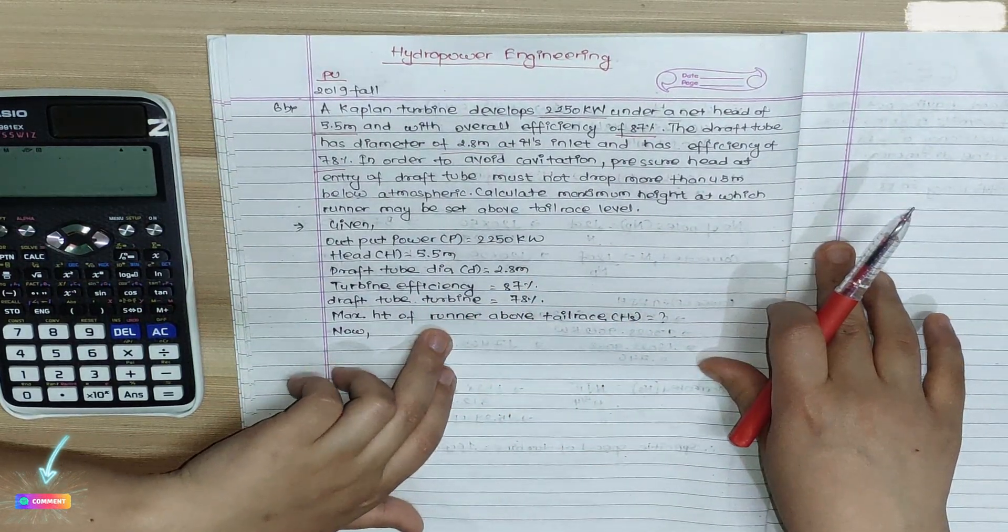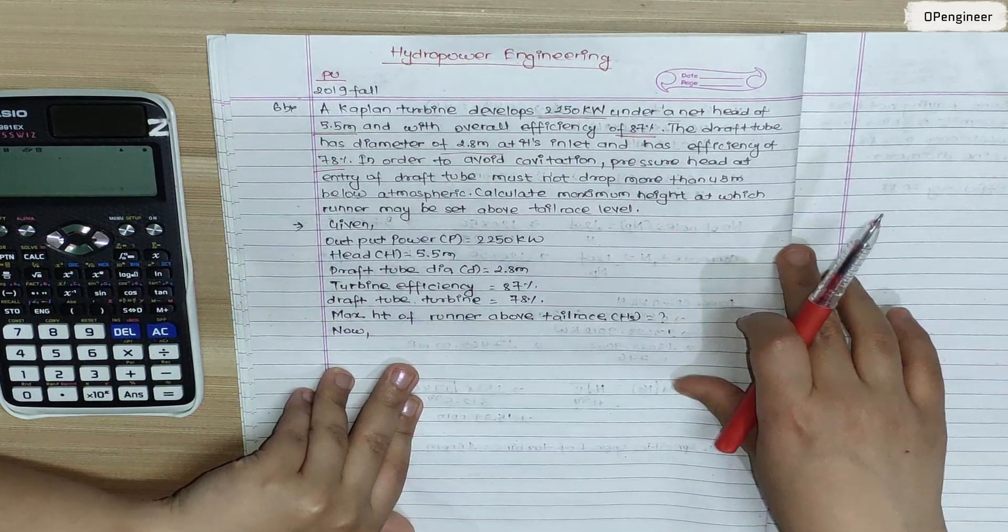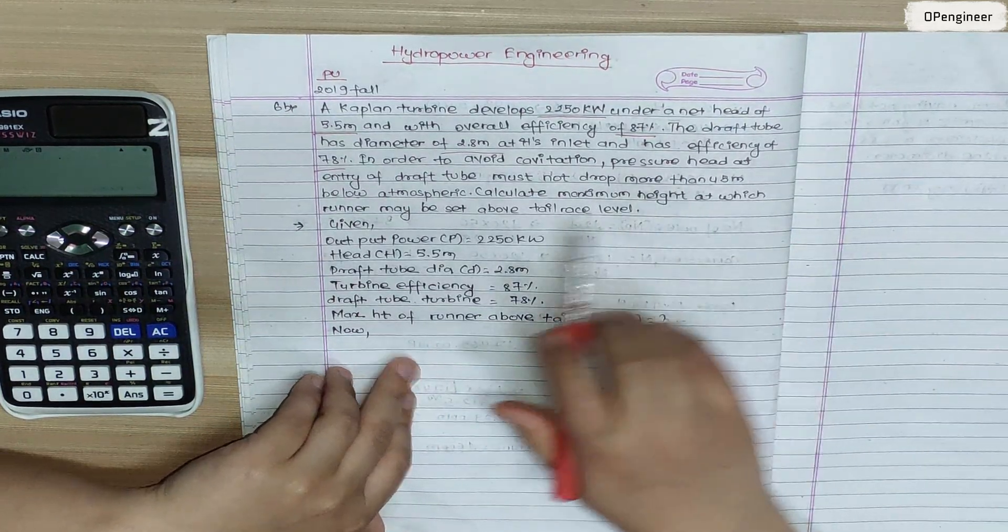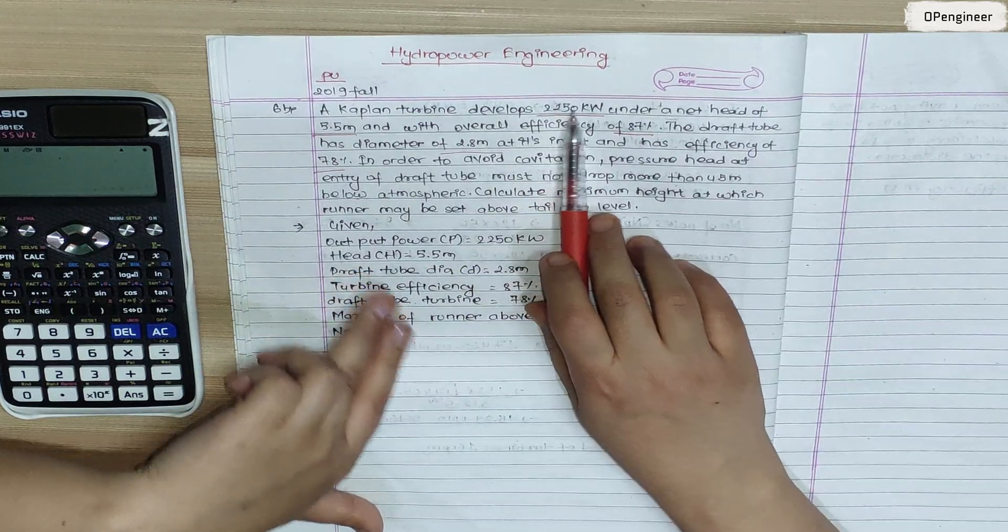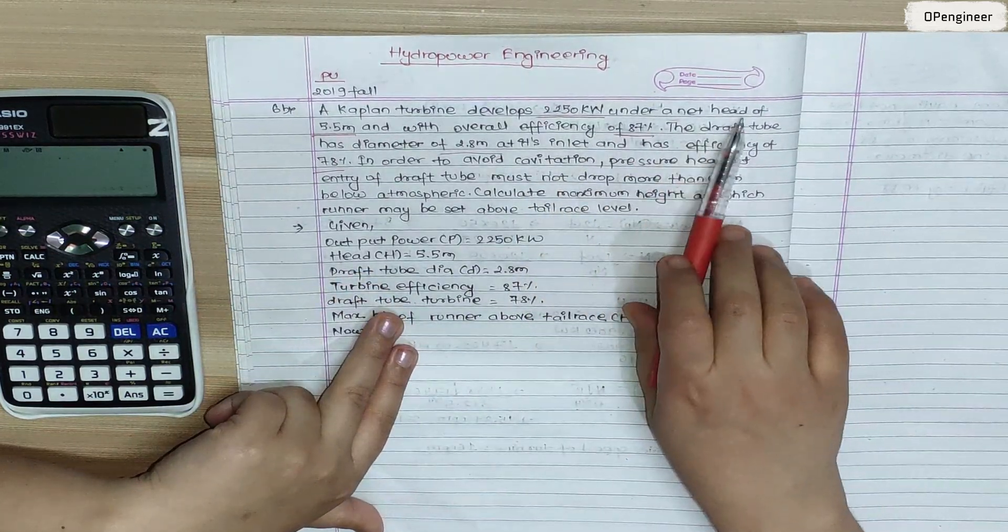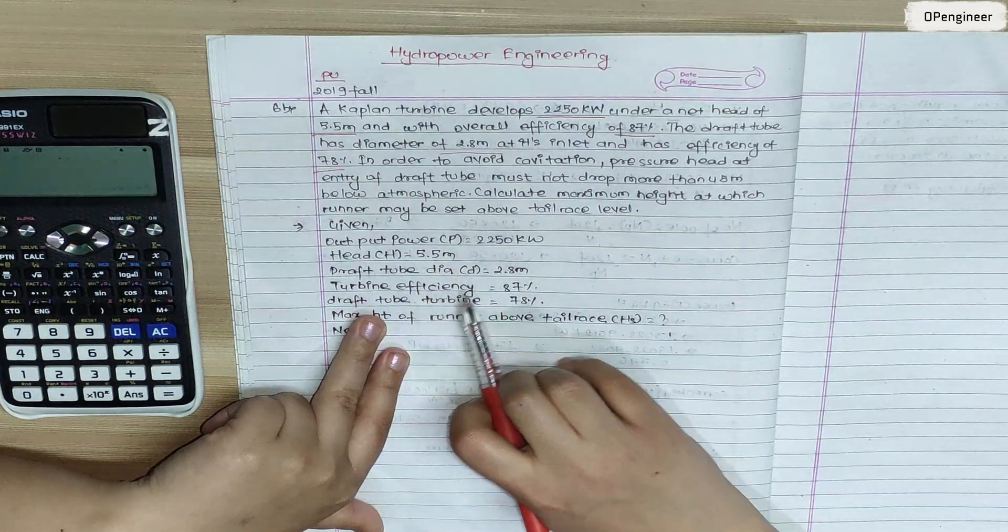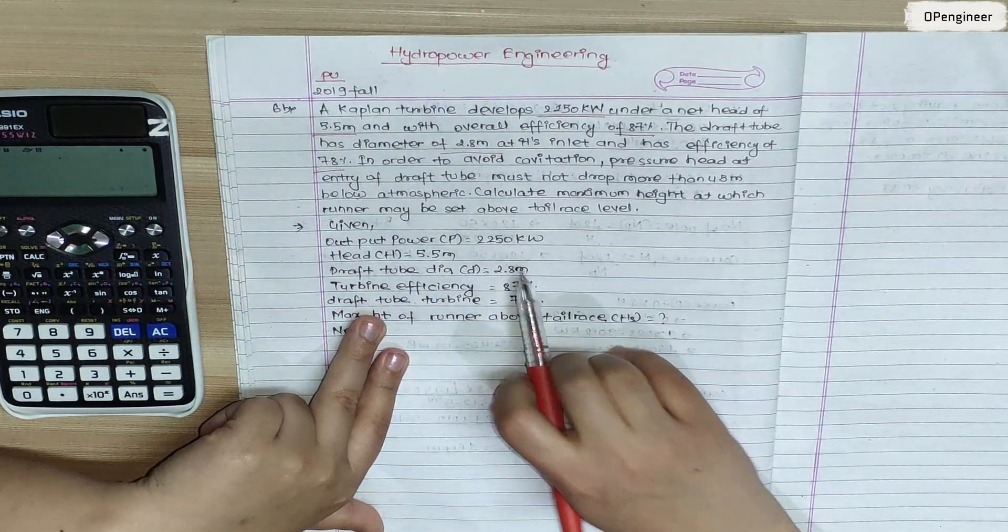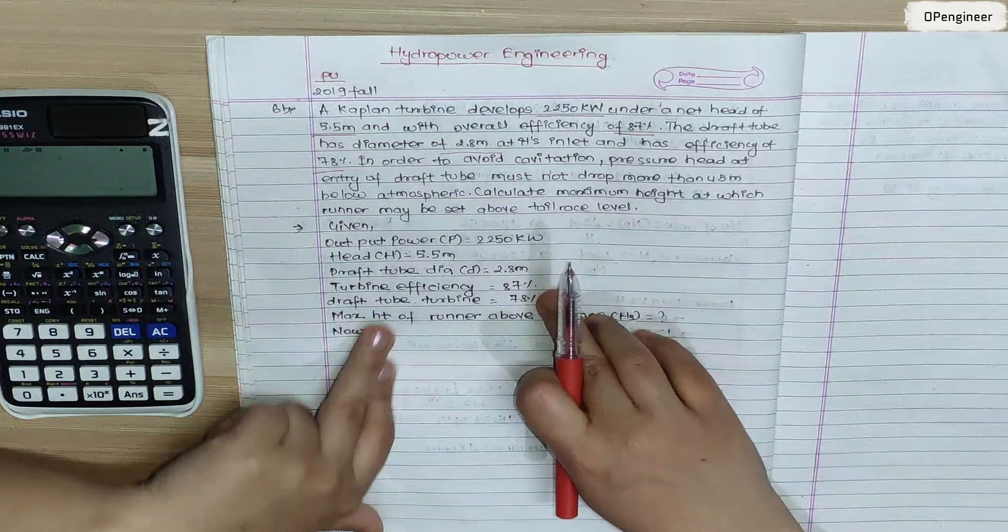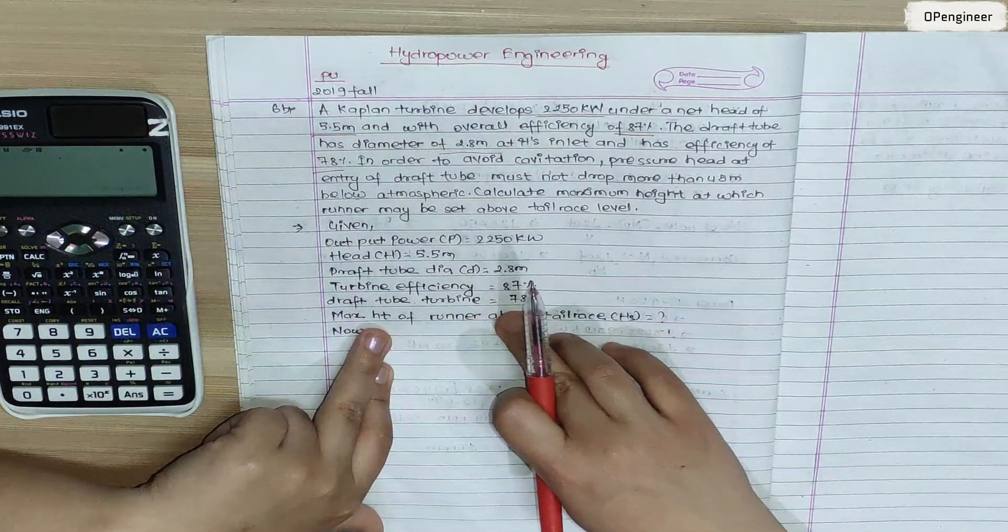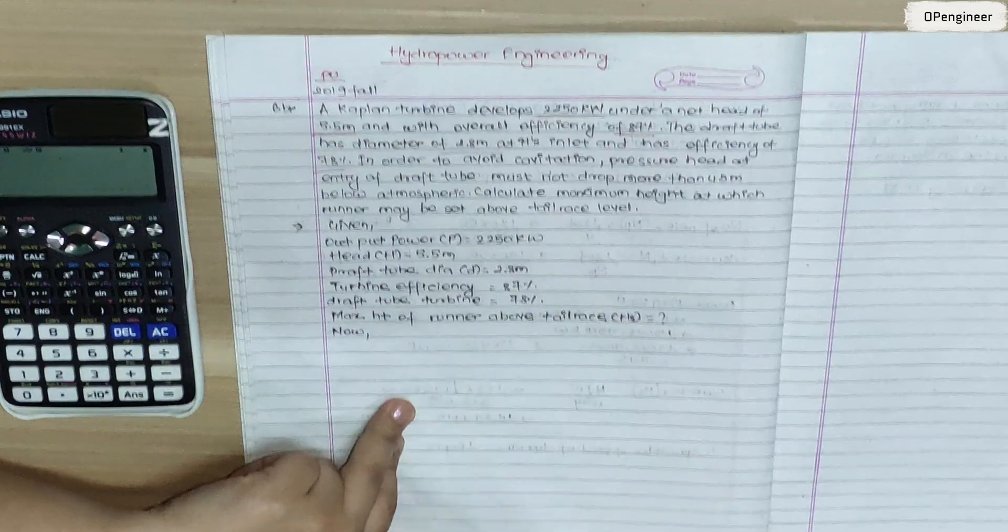Given data: output power is 2250 kW, the net head is 5.5 m, the draft tube diameter is 2.8 m, turbine efficiency is 87%, draft tube efficiency is 78%.